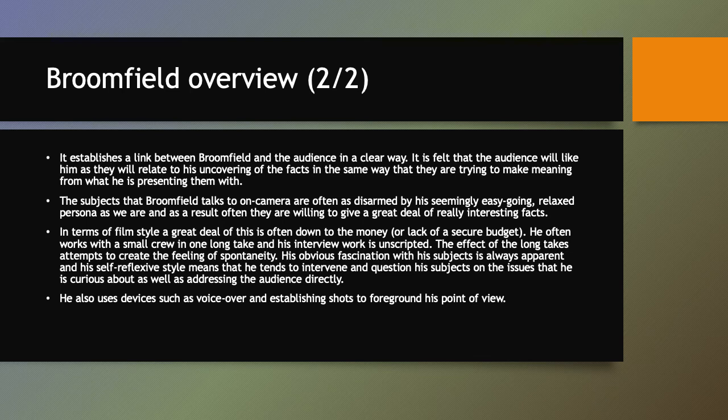The self-reflexive style — revealing the construction of the film — means he's able to intervene and directly question his subjects on issues he's curious about, as well as sometimes turning to address us as spectators directly. He often uses devices like voiceover and establishing shots which foreground and make explicit his point of view. This is really different to Peter Watkins, who hides his perspective, whereas Broomfield is always much more explicit.